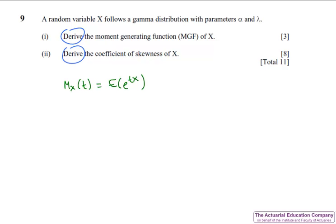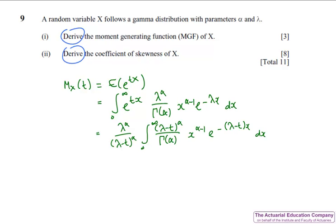The definition of an MGF is that it's the expectation of e to the TX, so we'll do the integral of e to the TX times the PDF. This won't be straightforward unless you use a clever trick, which is to make it look like another gamma distribution. We can then use the fact that we're integrating this PDF of the new gamma over the full range, which will give us 1.